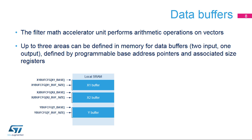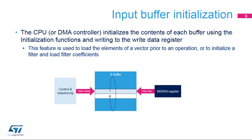Buffer base address and size have to be programmed. Note that X1, X2, and Y buffers may overlap. These buffers are not visible in the CPU mapping. Before starting a filtering operation, the CPU or DMA controller initializes the contents of input buffers using the initialization functions and writing to the WData register. The contents of input buffers can be either data to be filtered or filter coefficients. The data is transferred to the location within the target buffer indicated by a write pointer. After each new write, the write pointer is incremented. When it reaches the end of the allocated buffer space, it wraps back to the base address.